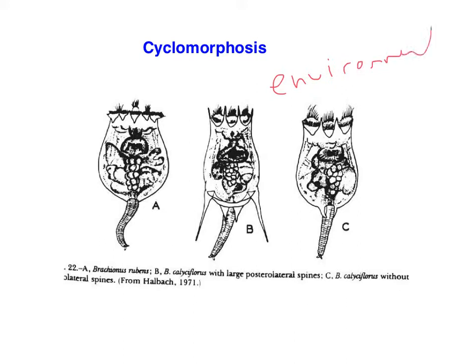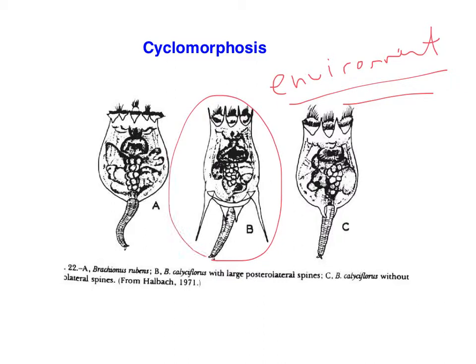When something in the environment induces this change, it's more of a polyphenism as opposed to a polymorphism, which implies a genetic basis — there's no genetic basis to this. Often what triggers the production of spines is the presence of predators nearby.